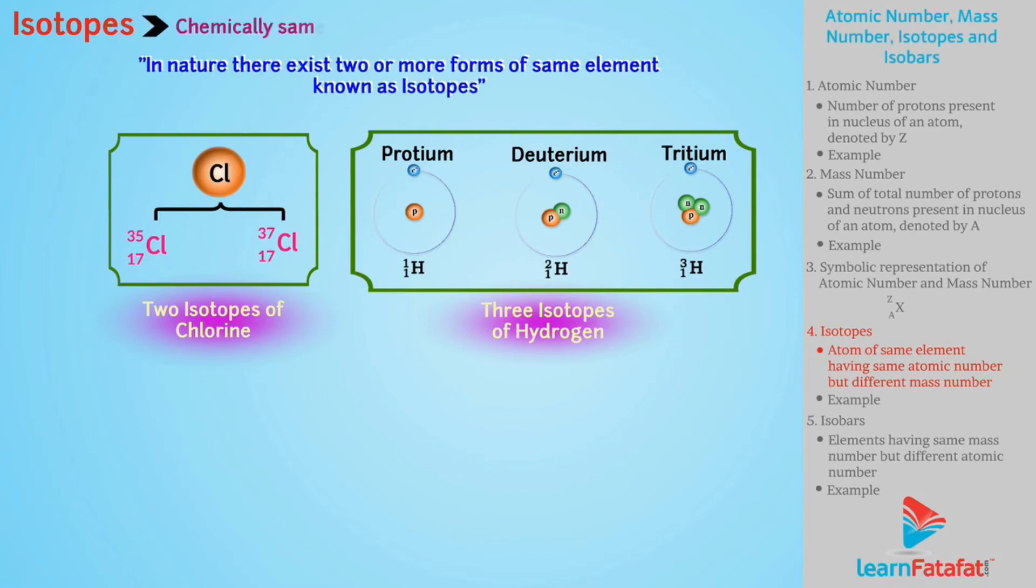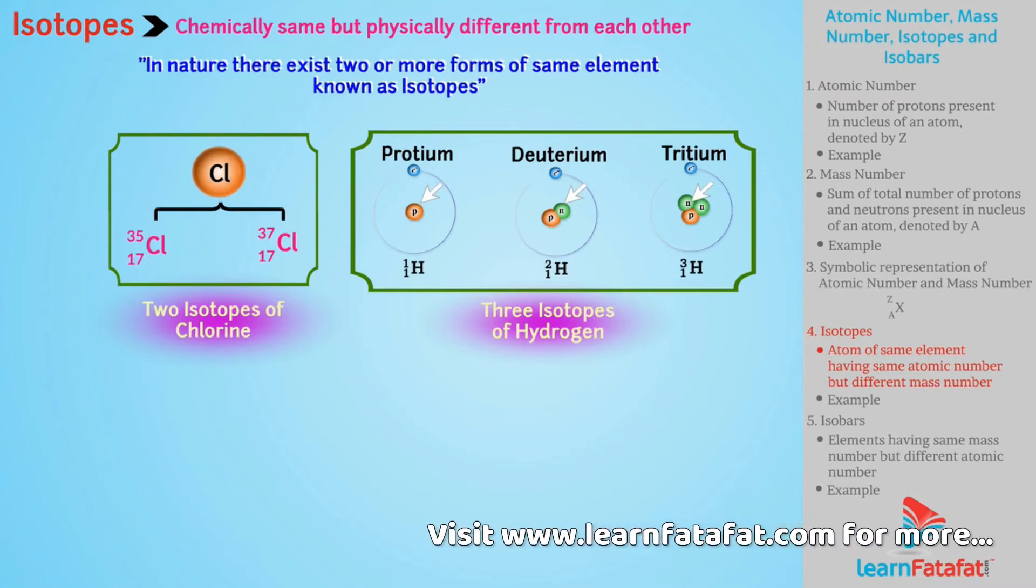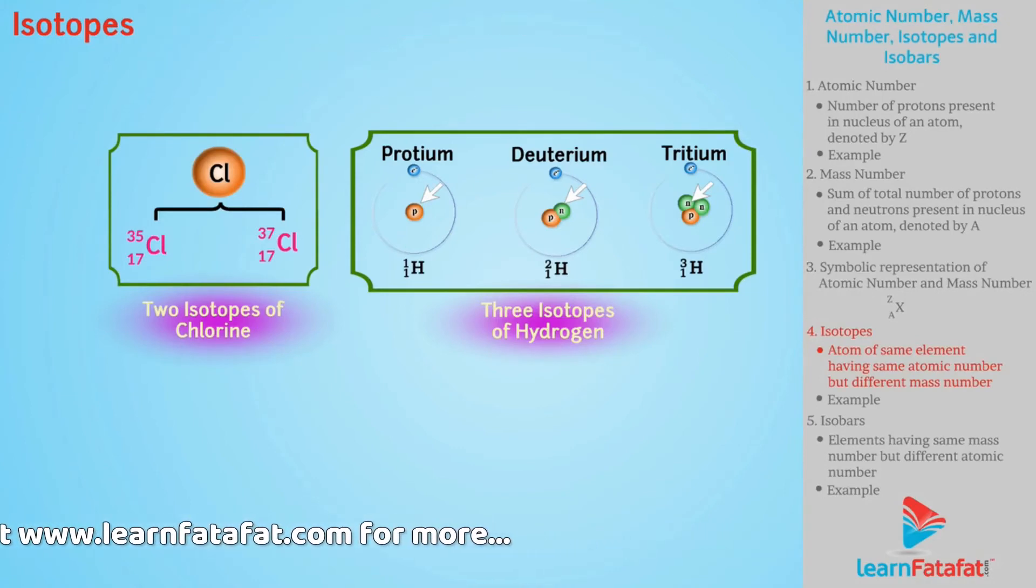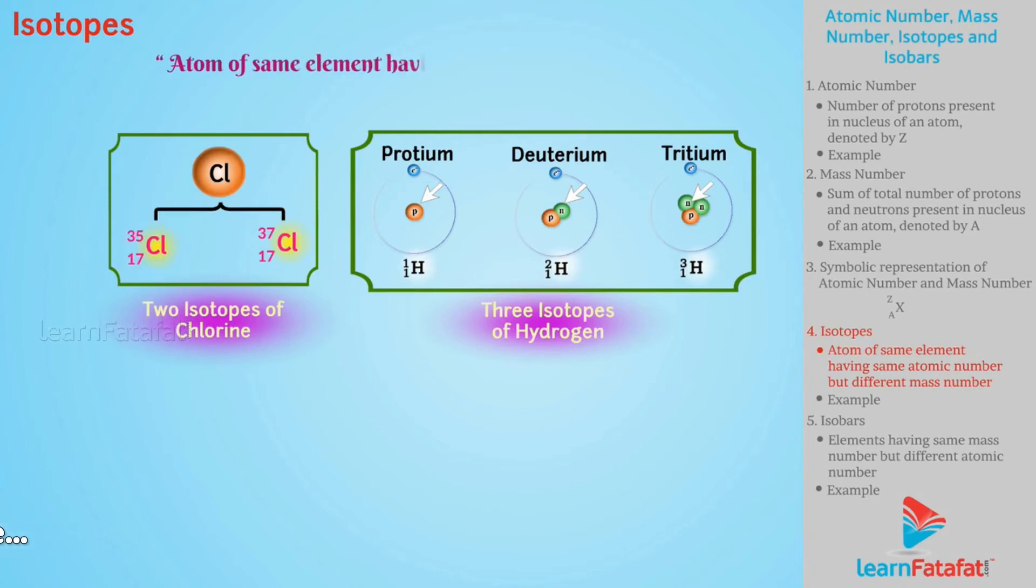Isotopes are chemically same but physically different from each other. This difference occurs due to change in number of neutrons present in an atom of that element.